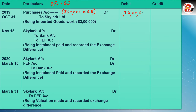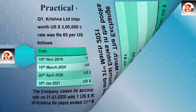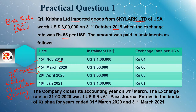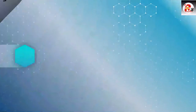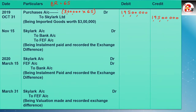Payment की amount आएगी 1 crore 95 lakhs। Entry होगी: Purchases account debit to Skylar Limited (party account)। Narration लिख लें। अब installments में जाते हैं। Installment number 1: 15th November 2019, 1 lakh dollar, rate बना 64। Base rate था 65, अब rate बना 64 — rate कम हुआ। Import में rate कम होता है तो profit होता है और FEF account credit होगा।